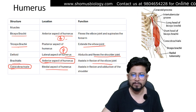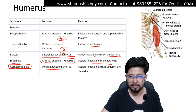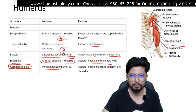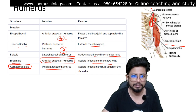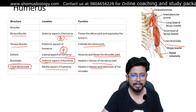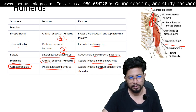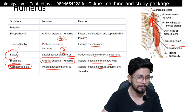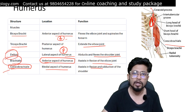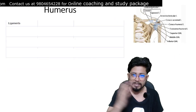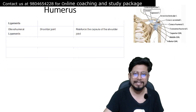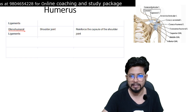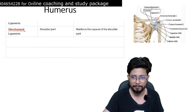Coracobrachialis is on the medial aspect of the humerus and performs flexion and abduction of the shoulder. So shoulder flexion is performed by the deltoid, brachialis, and coracobrachialis together.